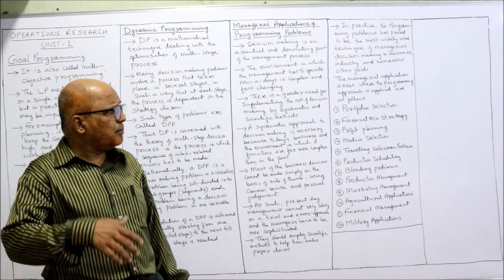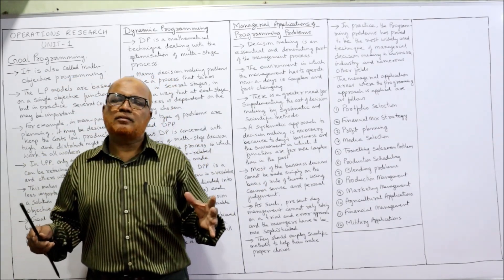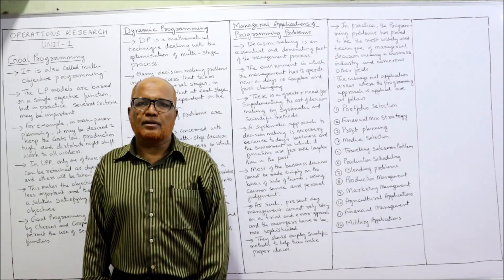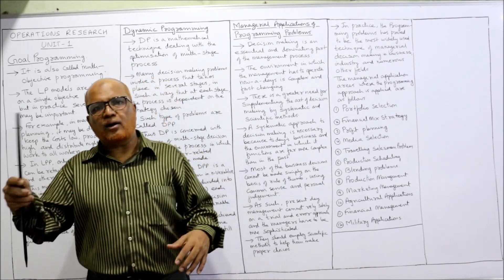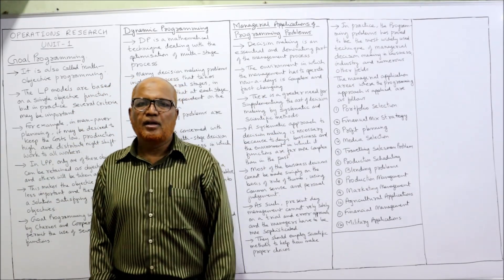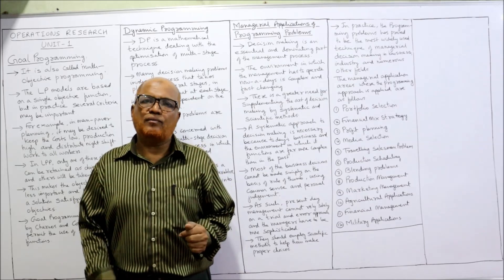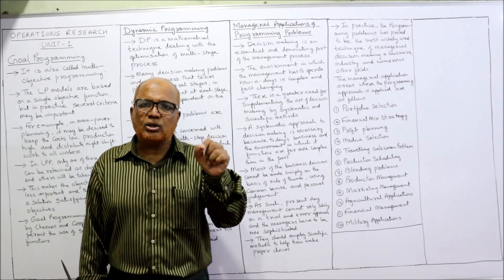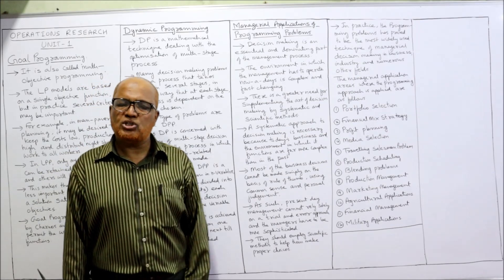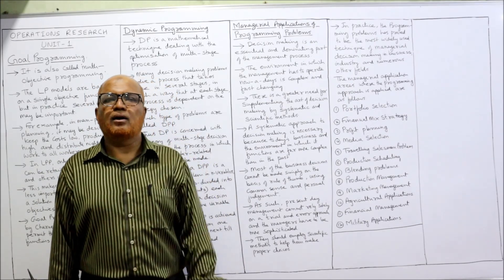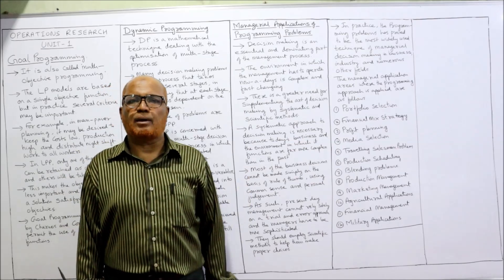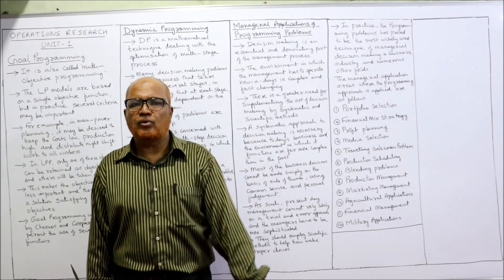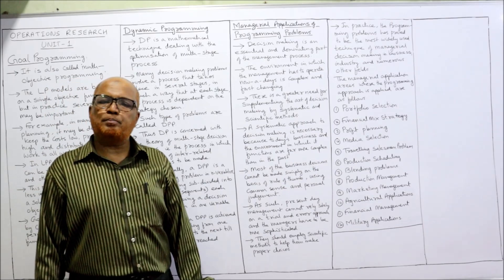Next is financial mix strategy, which refers to the capital structure of a business. Businesses depend on both owners' capital and borrowed funds — internal and external. There should be a proper combination of these funds. If the capital structure is not appropriate, the organization's objectives cannot be achieved. There should be a proper blending of owners' capital and outsiders' capital, and programming problems are very helpful in deciding the right financial mix.